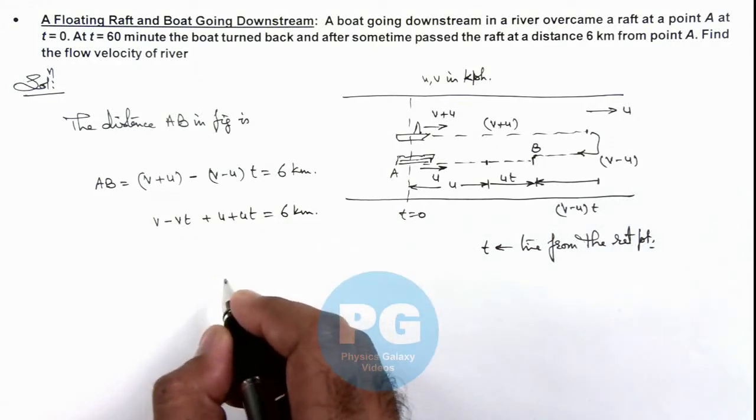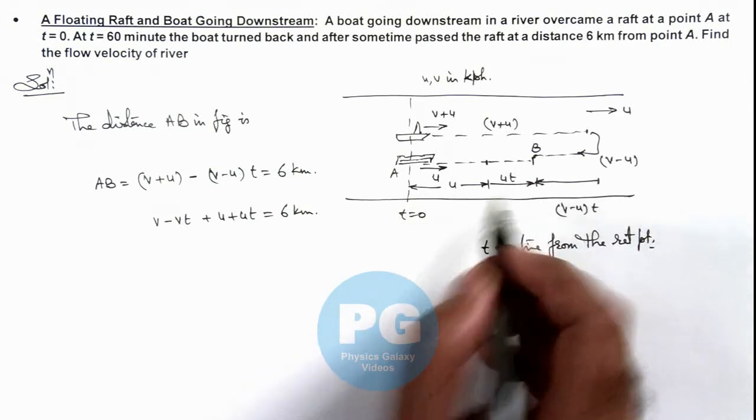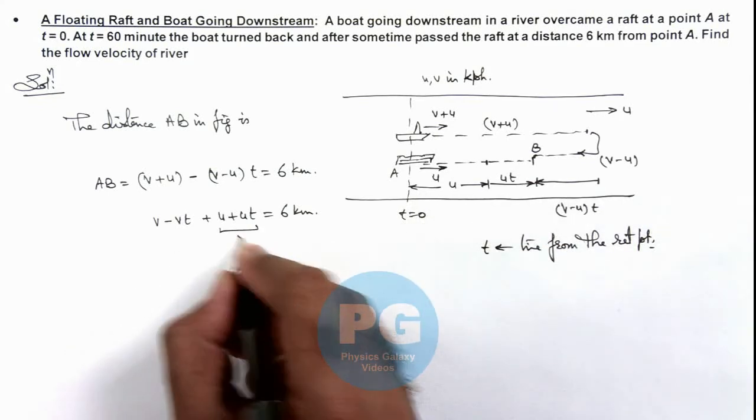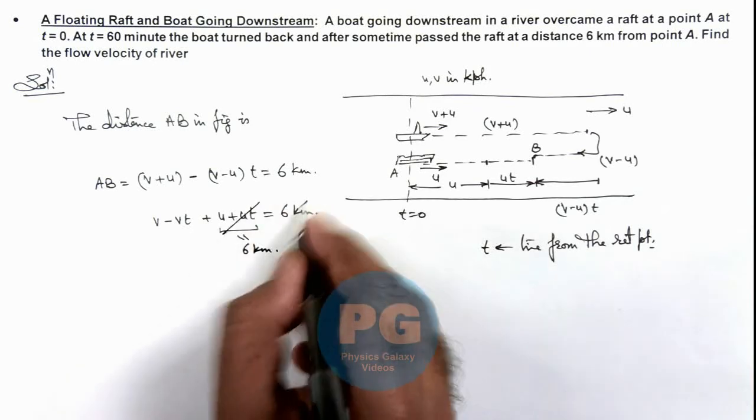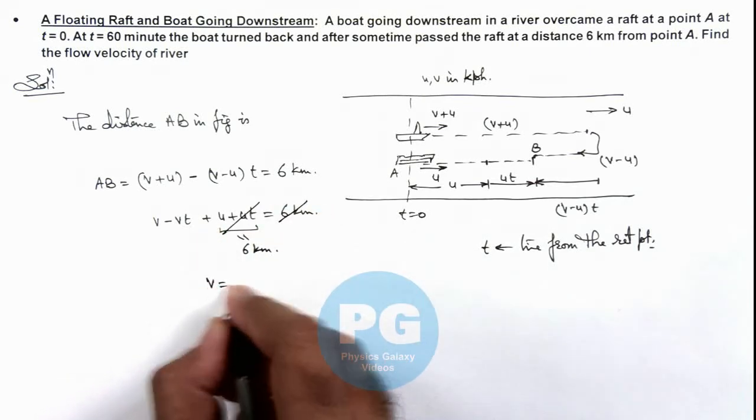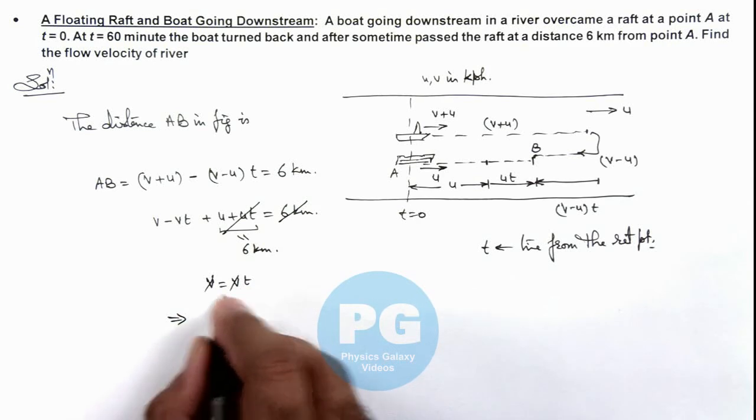We also have one thing: this distance, which is u plus ut, also equals 6 kilometers. This gets cancelled out, and we are getting v equals vt, which further simplifies.